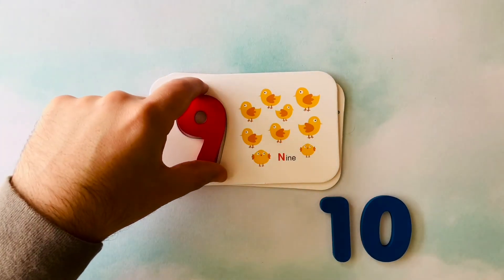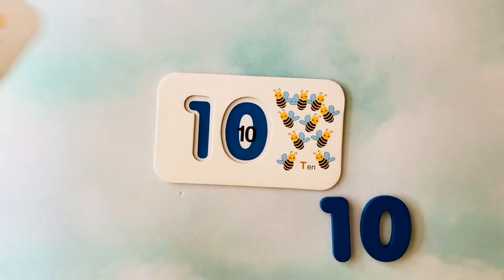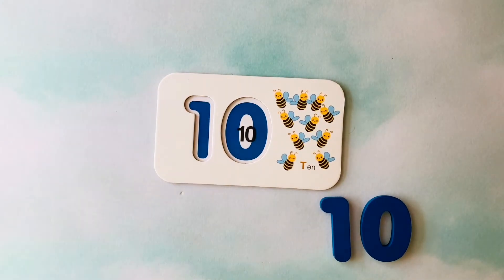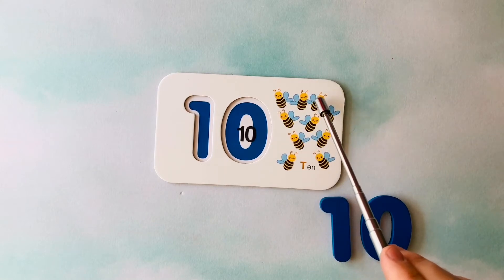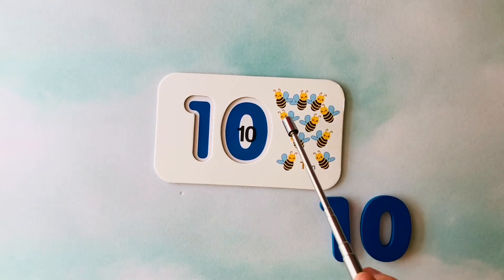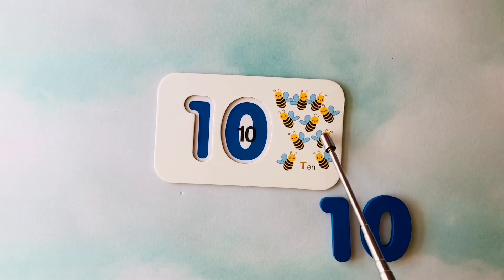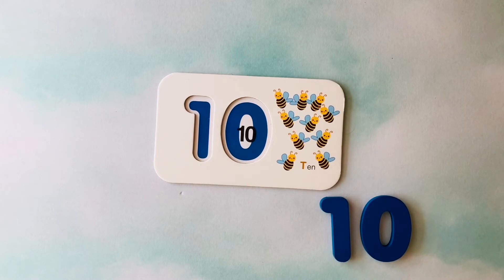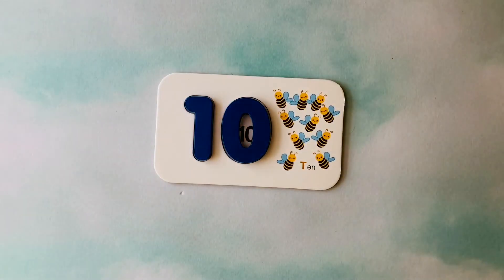How many bees do you see? I see one, two, three, four, five, six, seven, eight, nine, ten bees. This is the number ten.